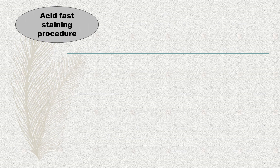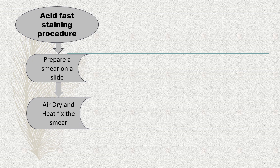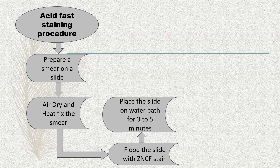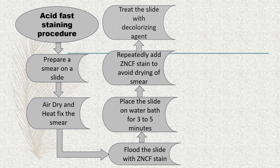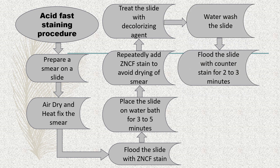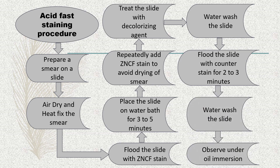Let's look at a flow chart of the acid-fast staining procedure. First, prepare a smear on a slide. Air dry and heat fix the smear. Flood the slide with ZNCF stain, that is Ziehl-Neelsen Carbol-Fuchsin stain. Place the slide on the water bath for 3–5 minutes. Repeatedly add ZNCF stain to avoid drying of the smear. Treat the slide with decolorizing agent. Water wash the slide. Flood the slide with counter stain for 2–3 minutes. Water wash the slide. Observe under oil immersion objective.